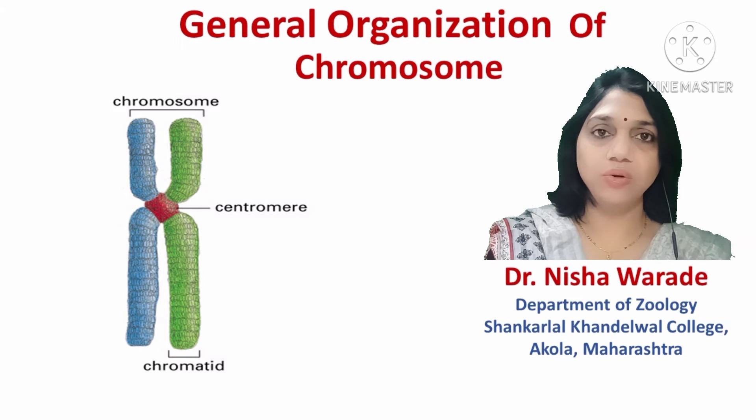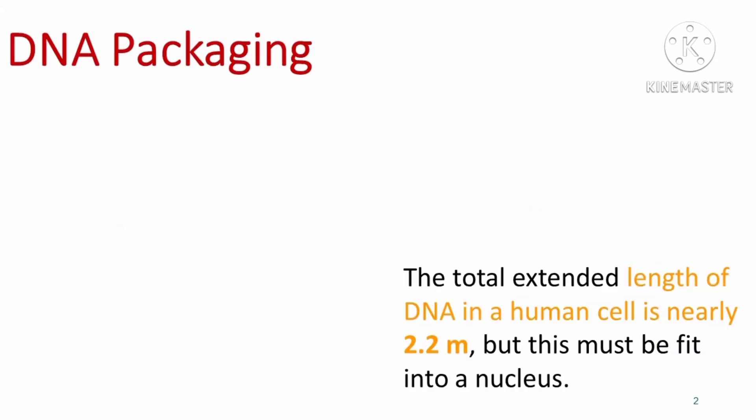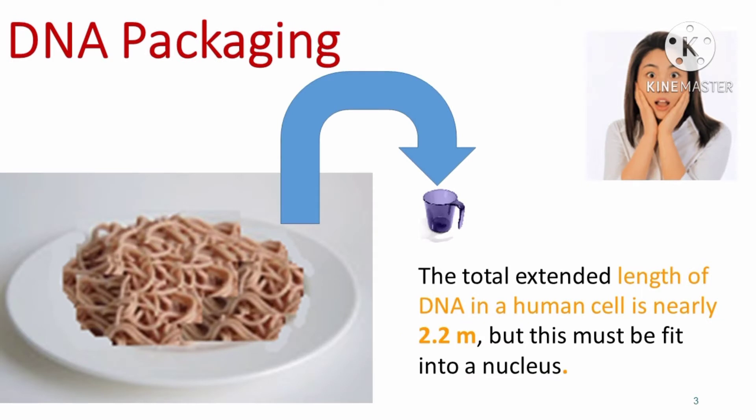Have you ever imagined how DNA is organized in a chromosome? In mammals, the length of DNA double helix is around about 2.2 meters, a length that is far greater than the dimension of a typical nucleus, which is 5 to 10 micrometers in diameter. What do you think? How is such a long DNA packaged in a cell? Today, we will see this important concept of packaging of DNA in a chromosome.